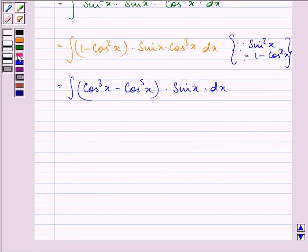Now let cos x be equal to t. That means we have minus sine x is equal to dt, right? So,